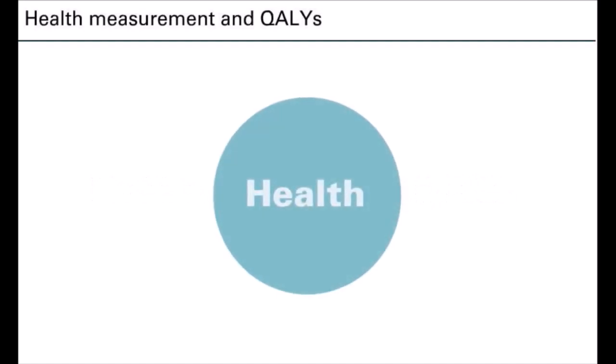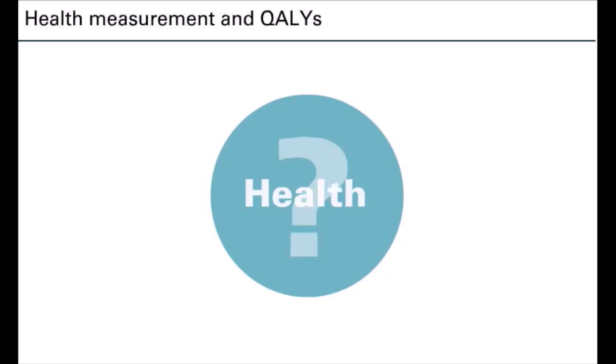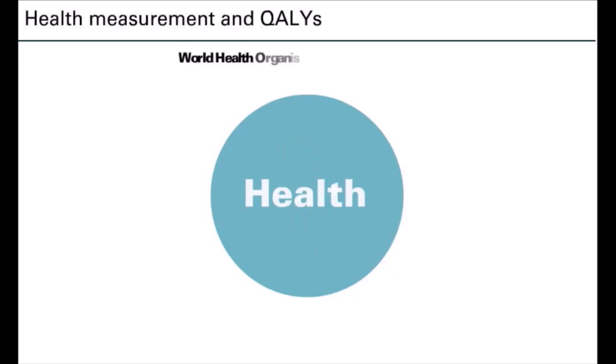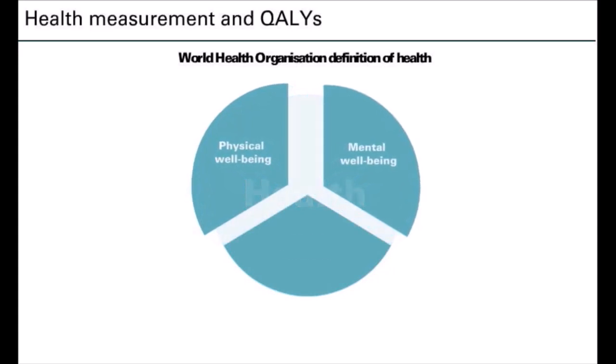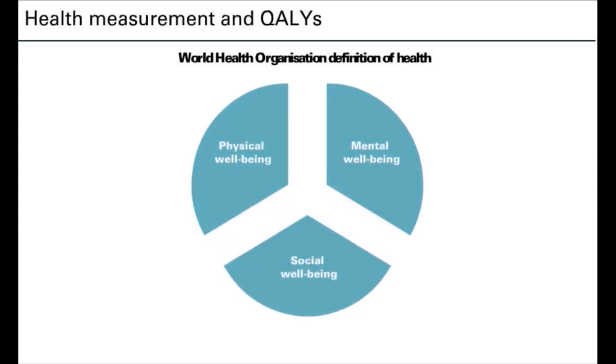Measuring health is important in assessing the impact of diseases and healthcare interventions on the population. But in order to measure it, we must first think about what we mean by health. There are many definitions of health. One of the first, which is often quoted, is from the World Health Organization's 1948 Constitution. This defines health as a state of complete physical, mental and social well-being, and not merely the absence of disease or infirmity.